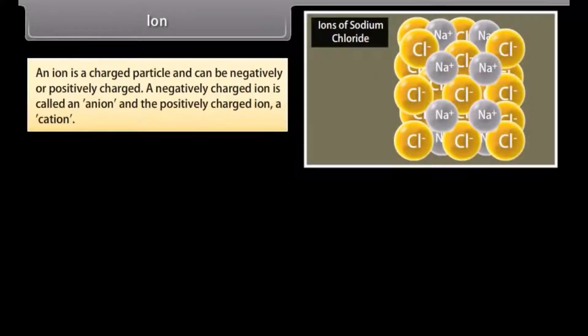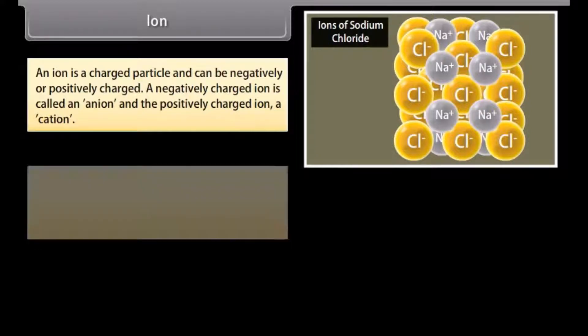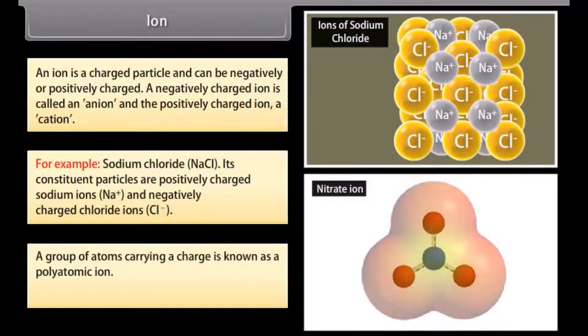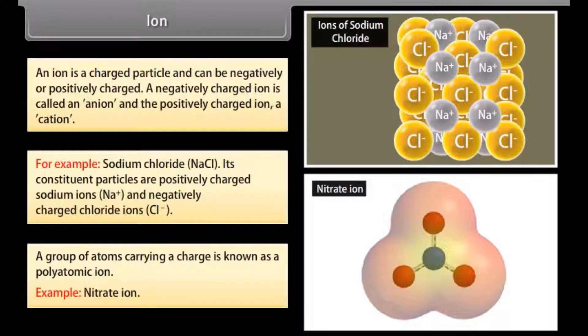An ion is a charged particle and can be negatively or positively charged. A negatively charged ion is called an anion and the positively charged ion is called a cation. For example, sodium chloride - its constituent particles are positively charged sodium ions and negatively charged chloride ions. A group of atoms carrying a charge is known as a polyatomic ion, for example, nitrate ion.